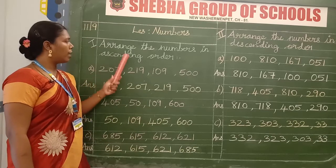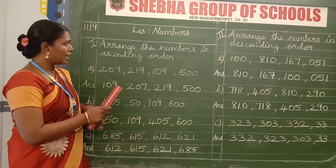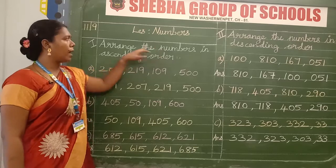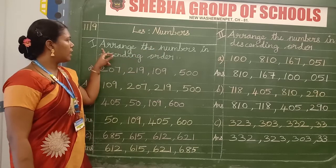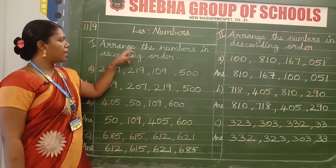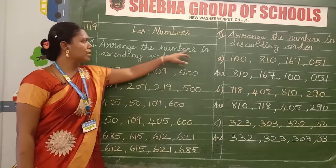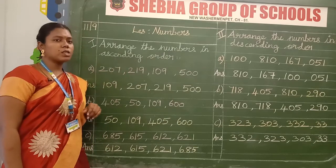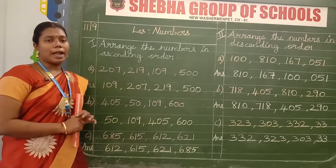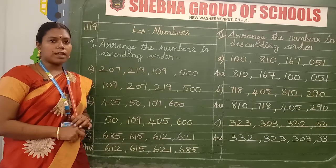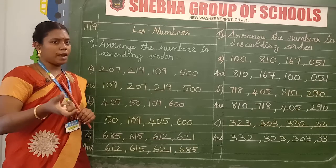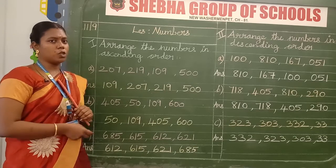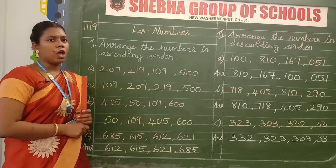Write neatly and give a finger gap. Write neatly, clearly, and spelling children. Arrange the numbers in ascending order. Ascending order means you write the numbers from smaller to bigger number — smaller number to bigger number. So you can write the ascending order this way.